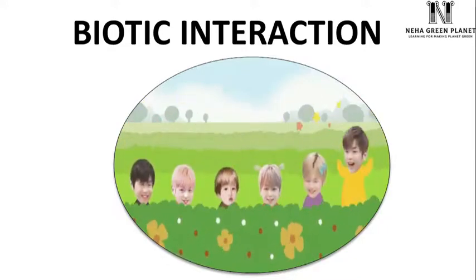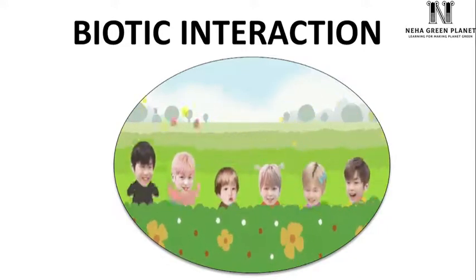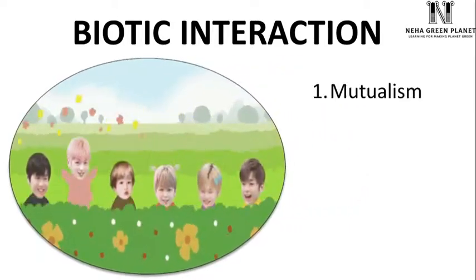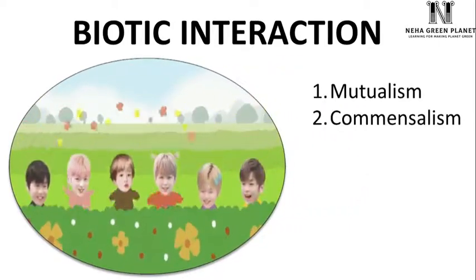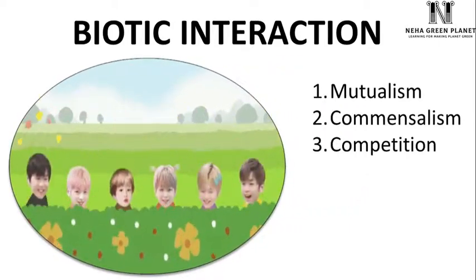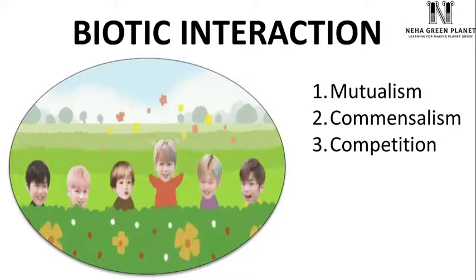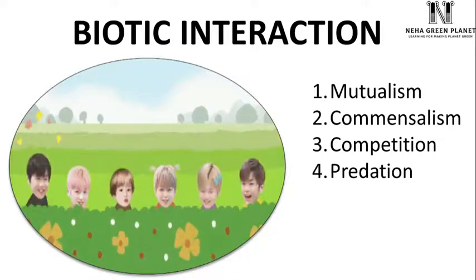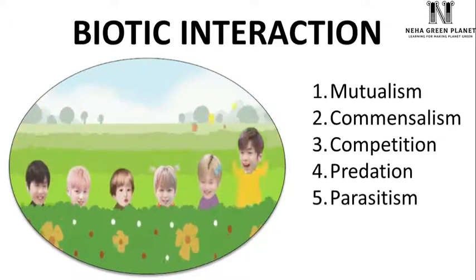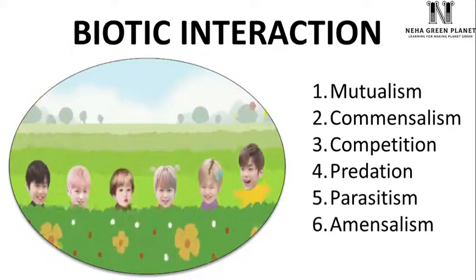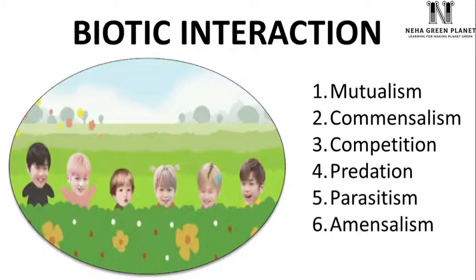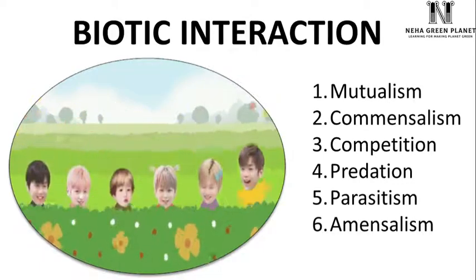Biotic interactions are of the following main types: first, mutualism; second, commensalism; third, competition; fourth, predation; fifth, parasitism; sixth, amensalism.